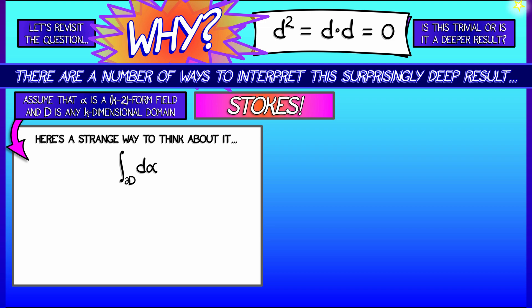Well, the boundary of d is k-1 dimensional. d alpha is a k-1 form field. Good. Stokes' Theorem says that what?